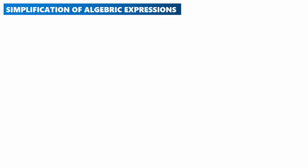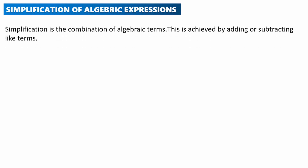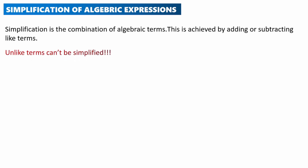Simplification of algebraic expressions — simplification is simply the combination of algebraic terms. This is achieved by adding or subtracting like terms. Under this topic it's very important that you understand the difference between like terms and unlike terms. Like terms can be simplified while unlike terms can't be simplified.